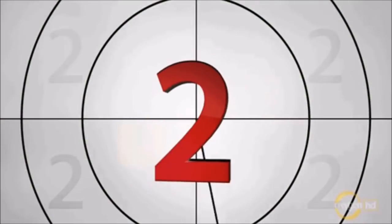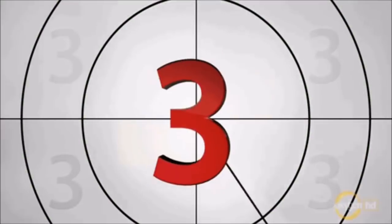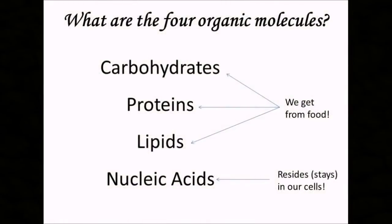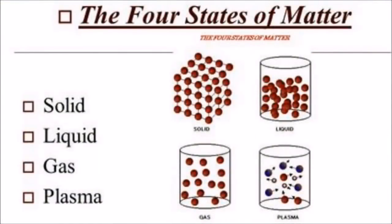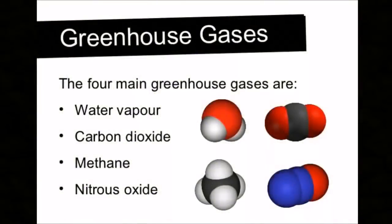What about the four base components needed for organic life to survive within our realm? Proteins, lipids, nucleic acids, and carbohydrates. Or our four base states of matter? Solids, liquids, gases, and plasma. Not forgetting, of course, our four main greenhouse gases: carbon, hydrogen, nitrogen, and oxygen.